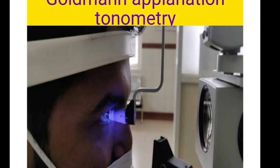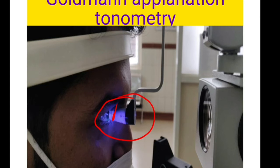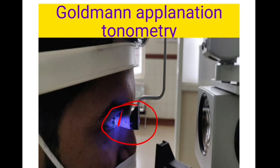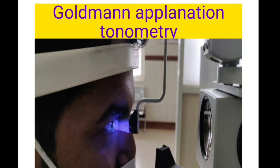Goldman's applanation tonometry uses a flat circular plexiglass prism of about 7 mm that will flatten 3.06 mm of the corneal surface, fixed to a Haag-Streit type slit lamp. When 0.1 gram of force is applied, it equals approximately 1 mmHg. The readings on the knob correspond to 1 gram, 2 grams, 3 grams, etc. Multiply that value by 10 to get the actual intraocular pressure in mmHg.